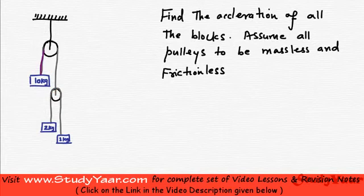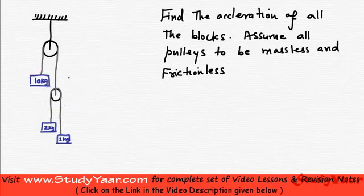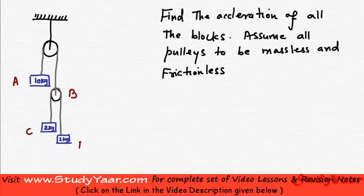If you look here, this is one constant rope along the pulley, and this is another rope along another pulley. The acceleration of this block and this pulley is going to be the same and opposite. Let's call this block A, this pulley B, this block C, and this block D. Then the acceleration of A plus the acceleration of B equals zero. This length of rope is the same.